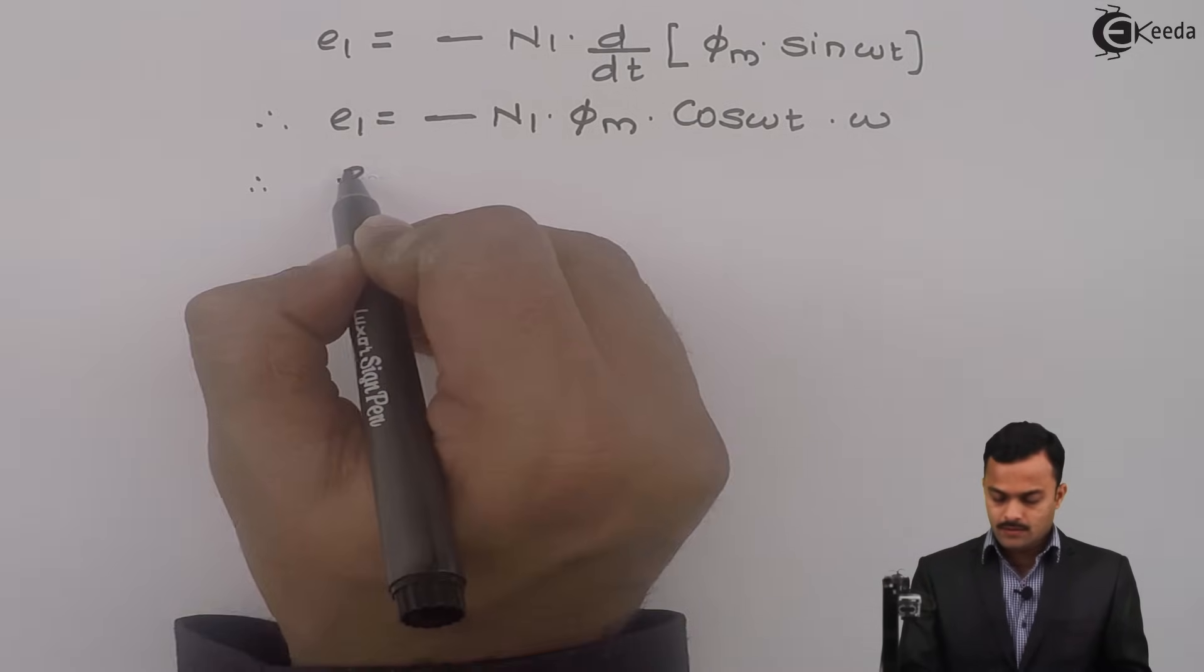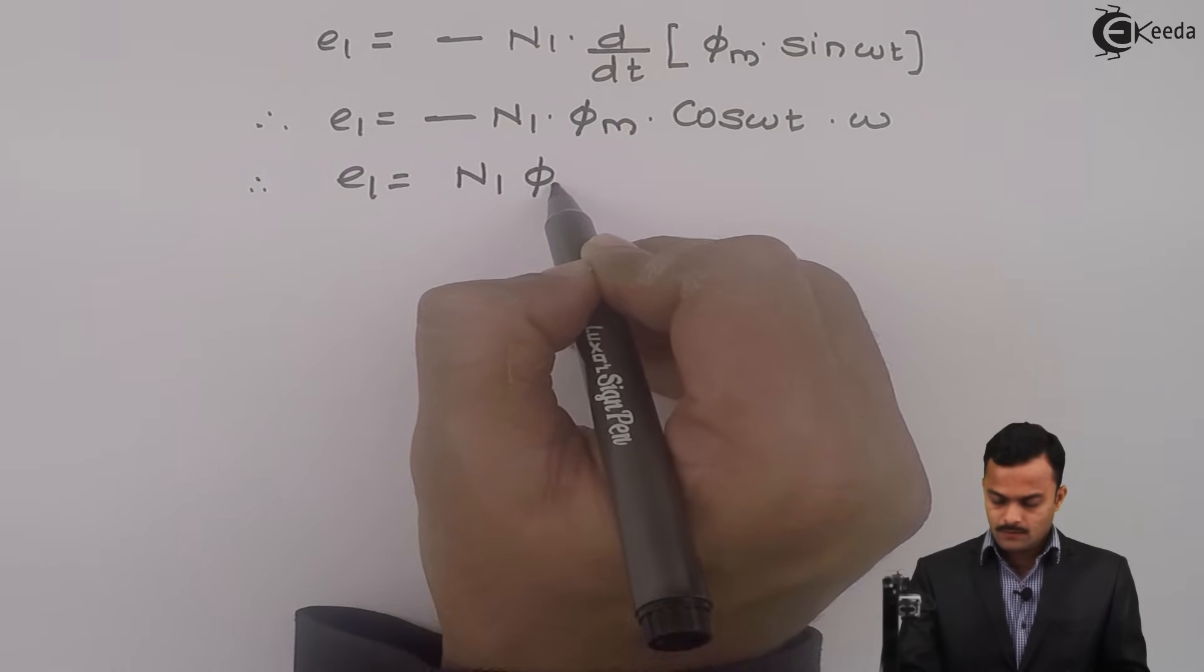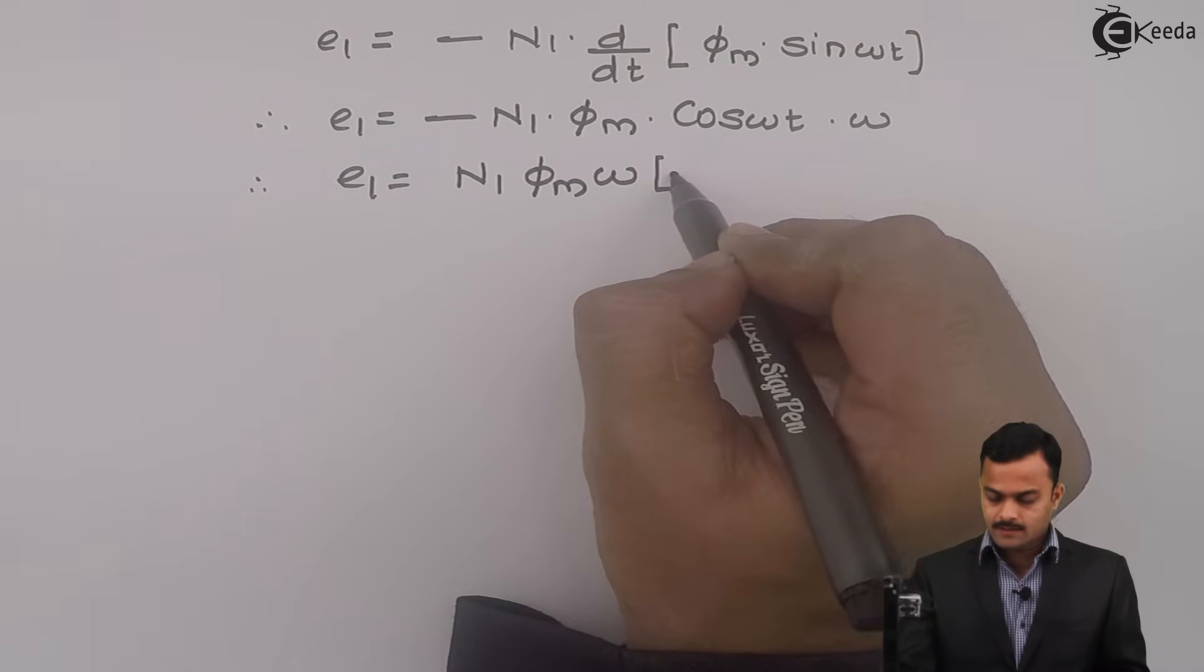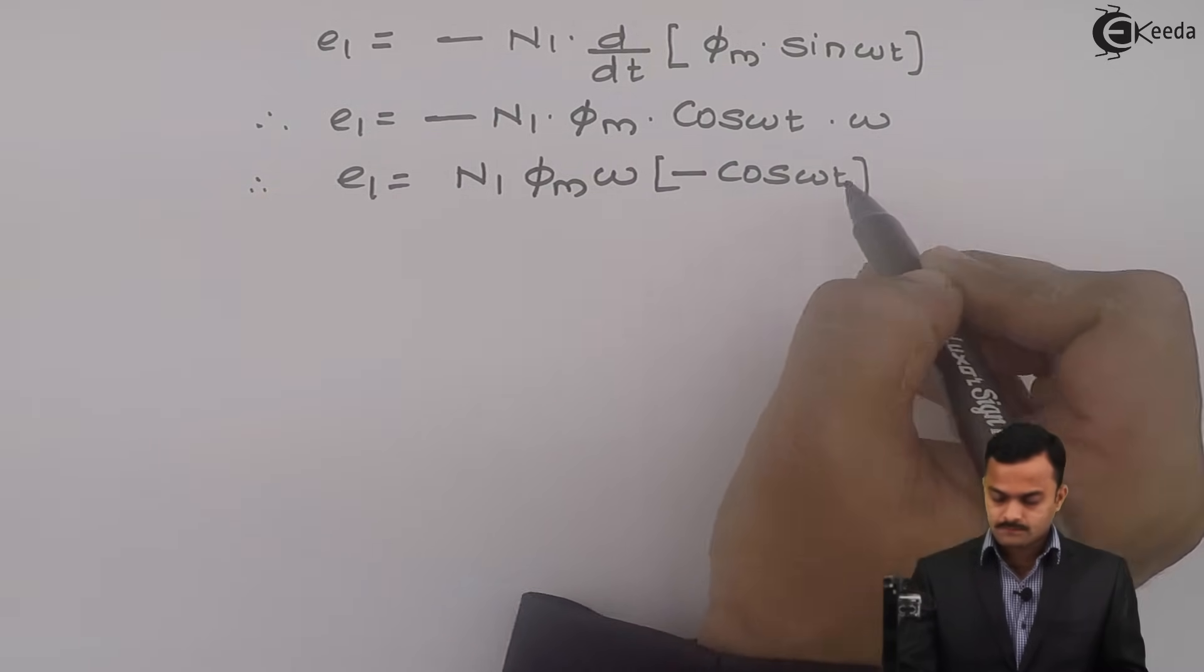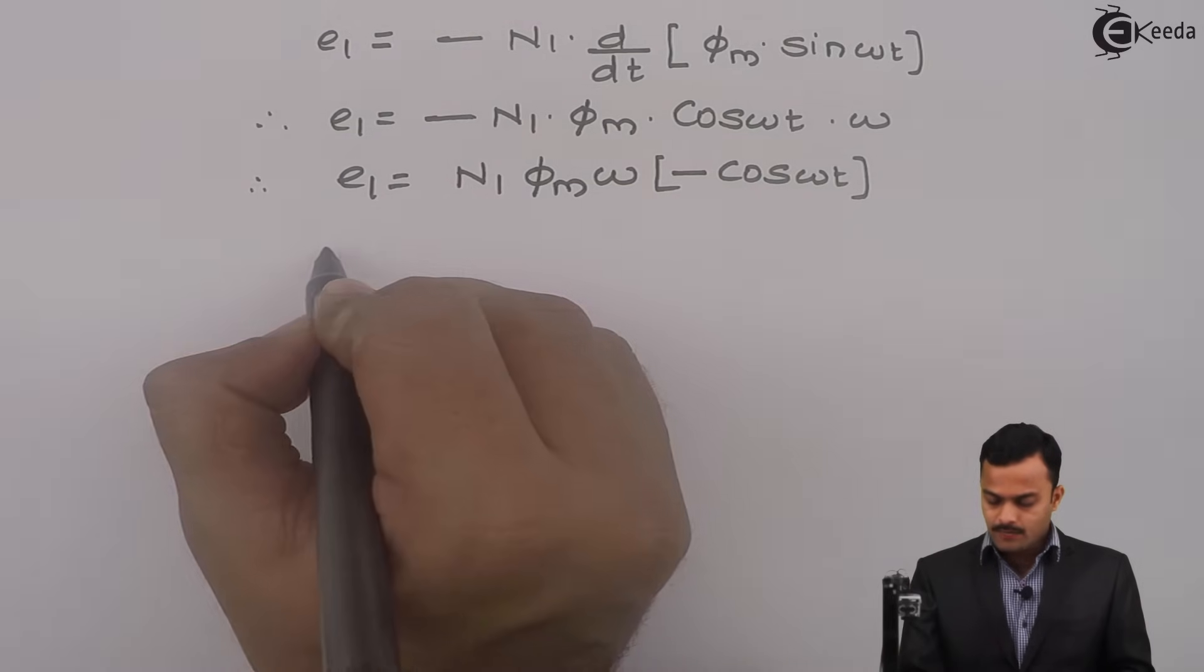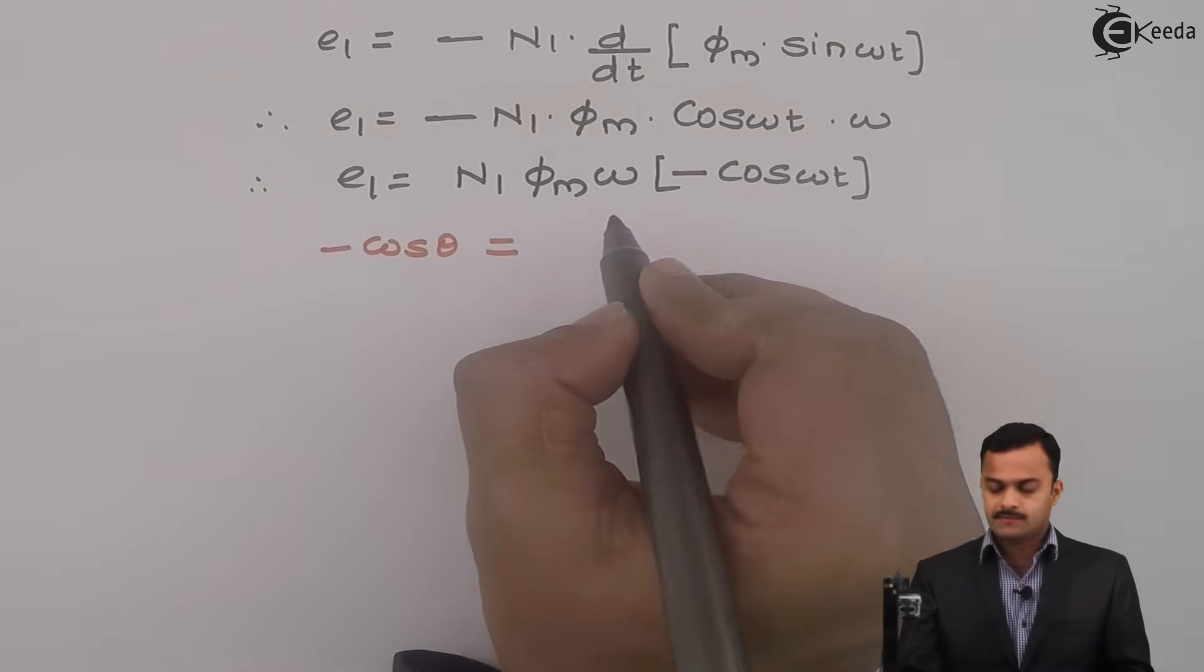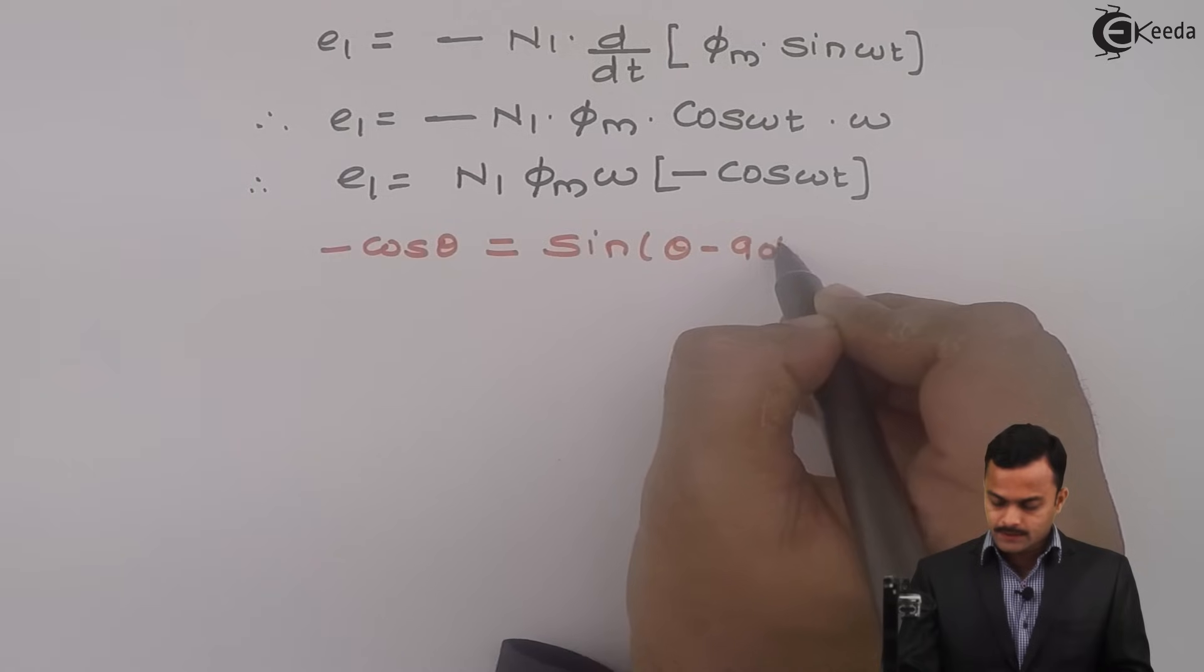Now this E1, I can write like this: n1 phi m omega bracket minus cos omega t. I want to write the equation of E1 in terms of standard sinusoidal equation. So for that purpose, this minus cos theta is replaced with sine theta minus 90 degree.